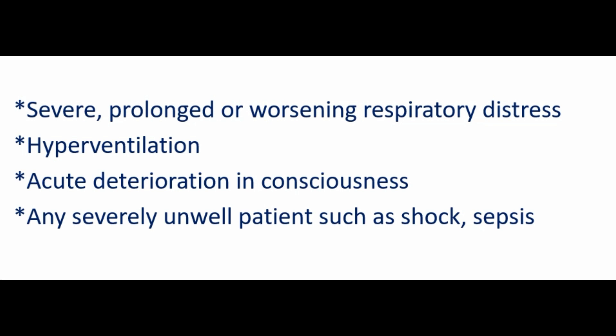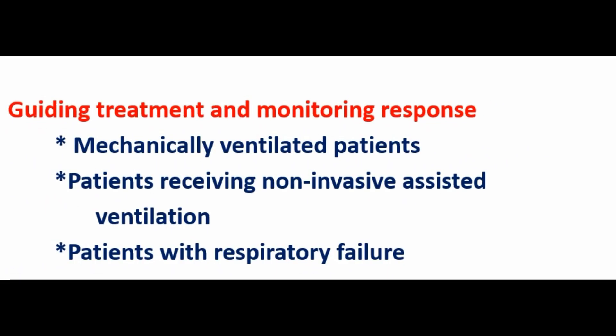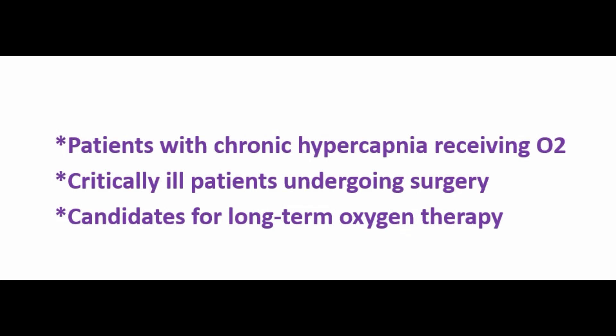Further indications include severe, prolonged, or worsening respiratory distress, hyperventilation, acute deterioration in consciousness, and any severely unwell patient such as in shock or sepsis. ABG is also used when pulse oximetry is unreliable or gives a suspicious result, as part of recognized illness severity scoring systems such as Glasgow criteria in pancreatitis. It helps guide treatment and monitor response in mechanically ventilated patients, patients receiving non-invasive assisted ventilation, patients with respiratory failure, patients with chronic hypercapnia receiving oxygen, critically ill patients undergoing surgery, and candidates for long-term oxygen therapy.